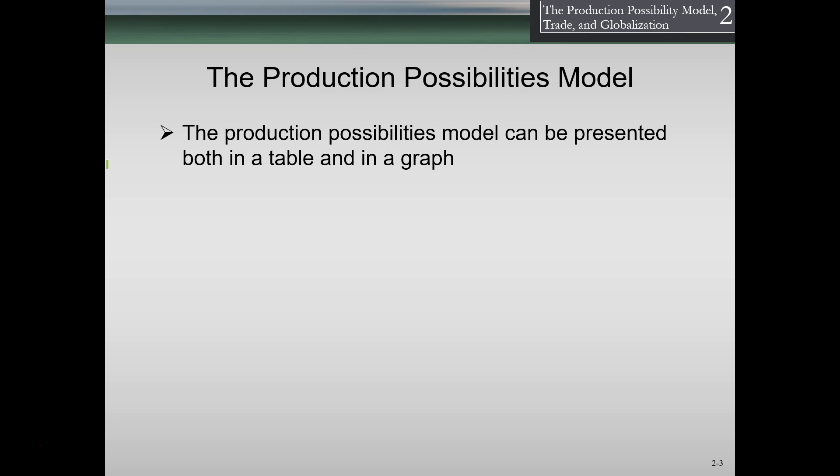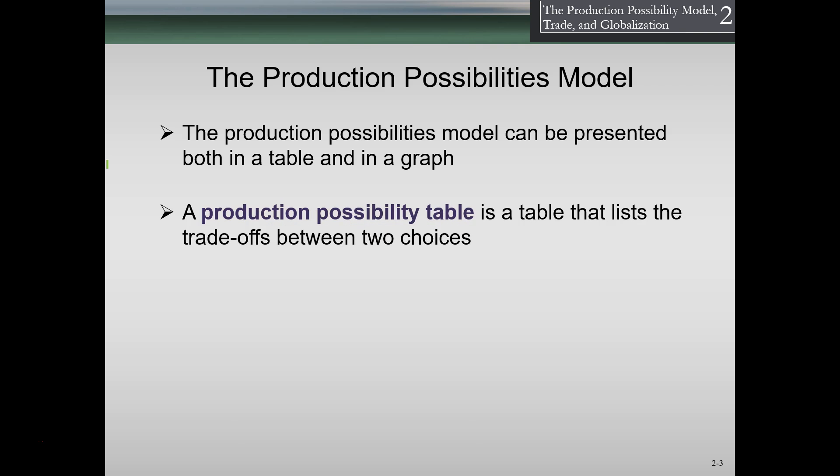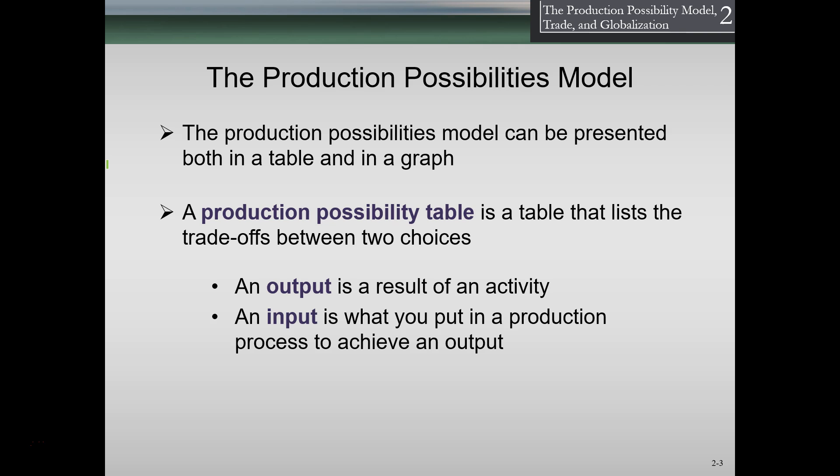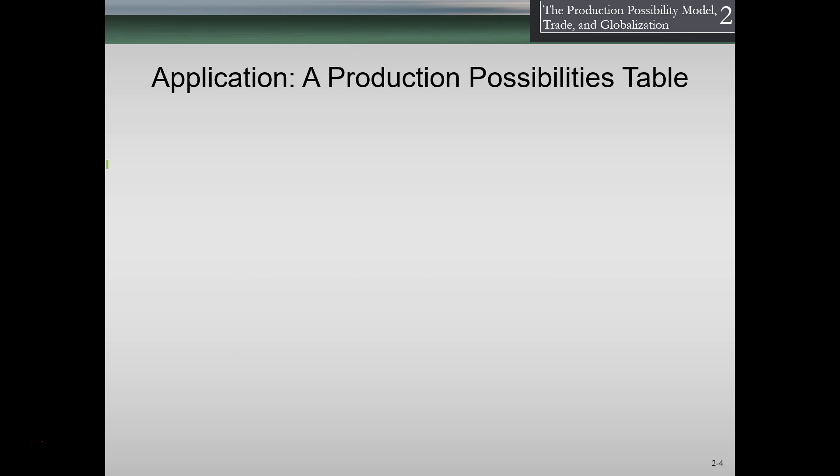The production possibility model can be presented both in a table and a graph. A production possibility table lists the trade-offs between two choices. In this case we're going to limit ourselves to two choices and plot the output — what you get as a result of an activity — and the input — what you put into a production process to achieve that output. So we put something in, like time, and we get something out, whatever we're producing or trying to achieve.